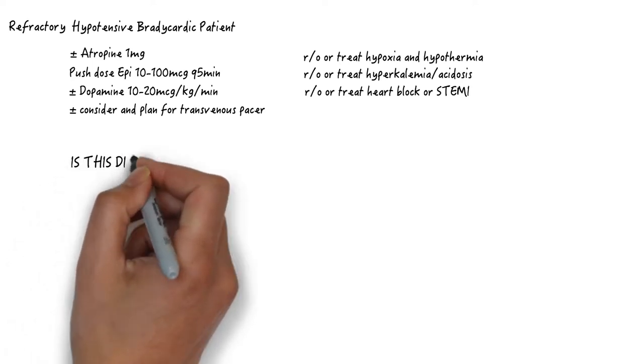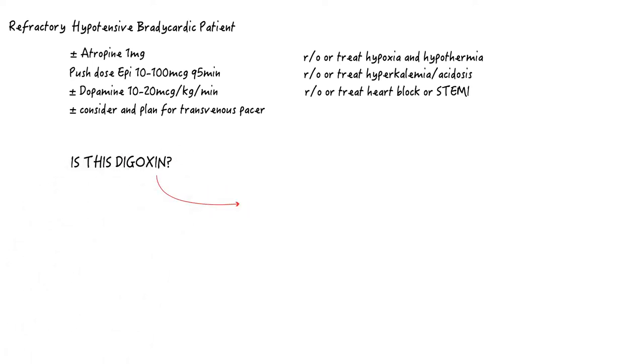You are considering a transvenous pacer but understand now that you are dealing with refractory bradycardia. The reversible causes are severe dig or severe beta blocker and calcium channel blocker toxicity. There is a high mortality to both, partly because the diagnosis and treatment are often delayed. Hence the purpose of this talk.